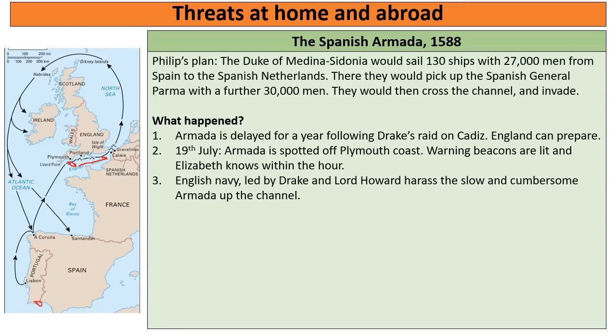The Spanish Armada was large, but each ship was large, cumbersome and slow because their main purpose was to transport a large number of soldiers. The English ships did not need to transport soldiers — they were actually very fast and manoeuvrable, and could fire cannons further and faster. So the English could inflict quite a lot of damage as they chased the Spanish up the Channel.